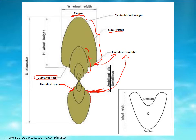The junction point between the ventral side and the flanks or lateral side is known as the ventrolateral margin. This margin may be angular or broadly rounded. The height of the last whorl — measured from the umbilical seam to the ventral margin — is known as whorl height or aperture height, abbreviated as AH.